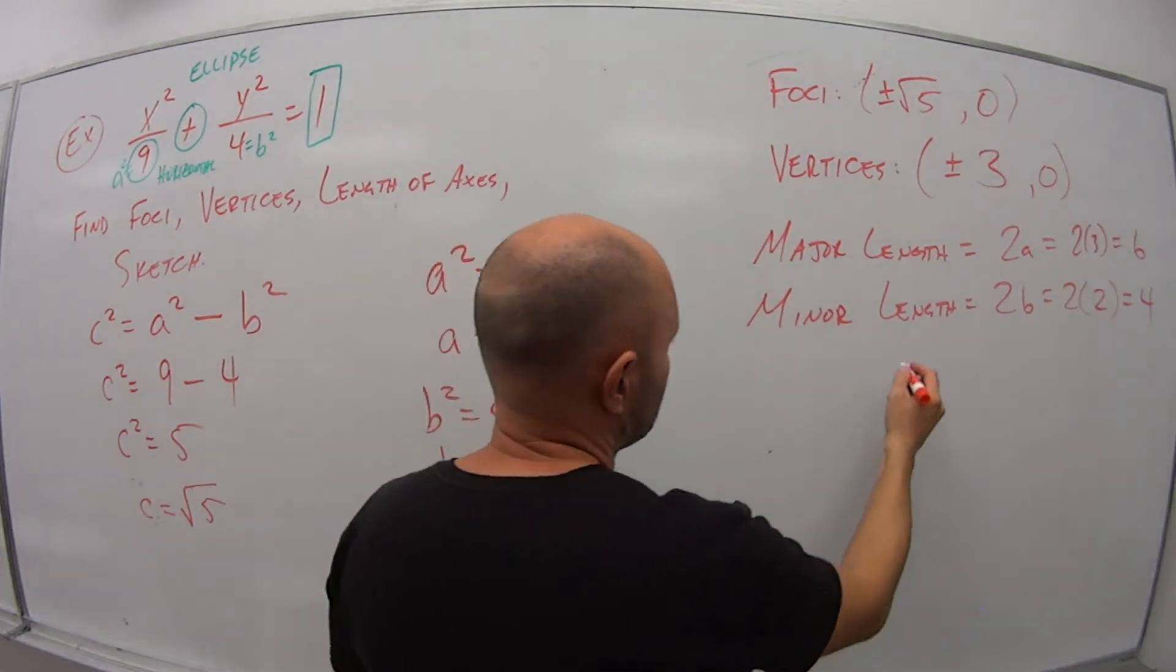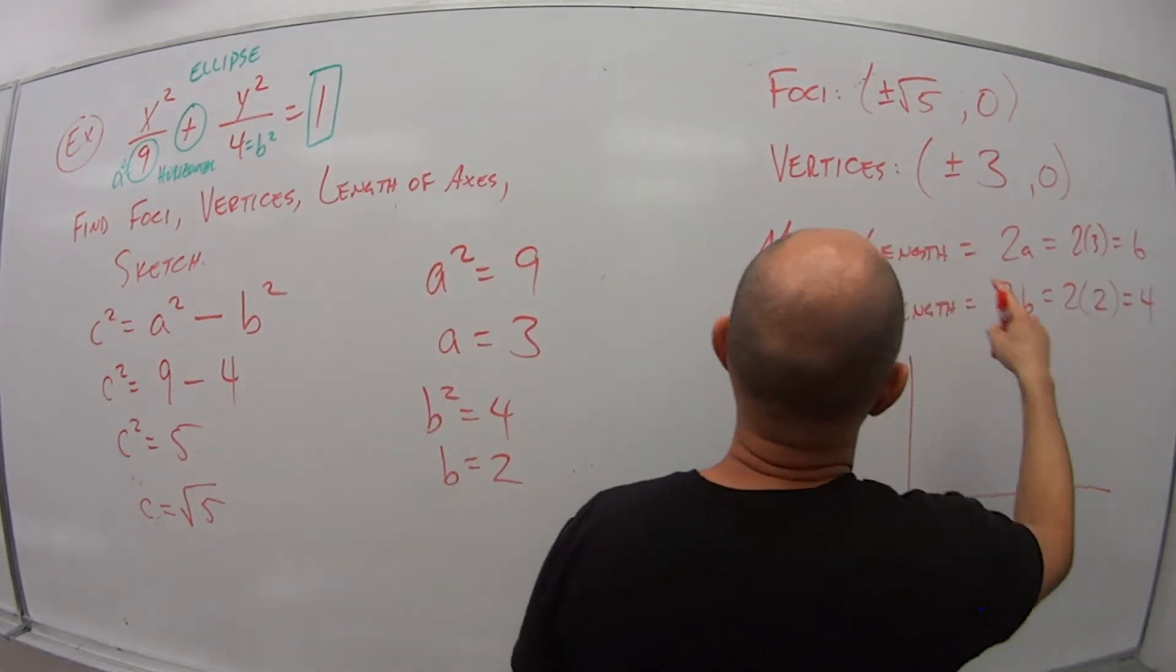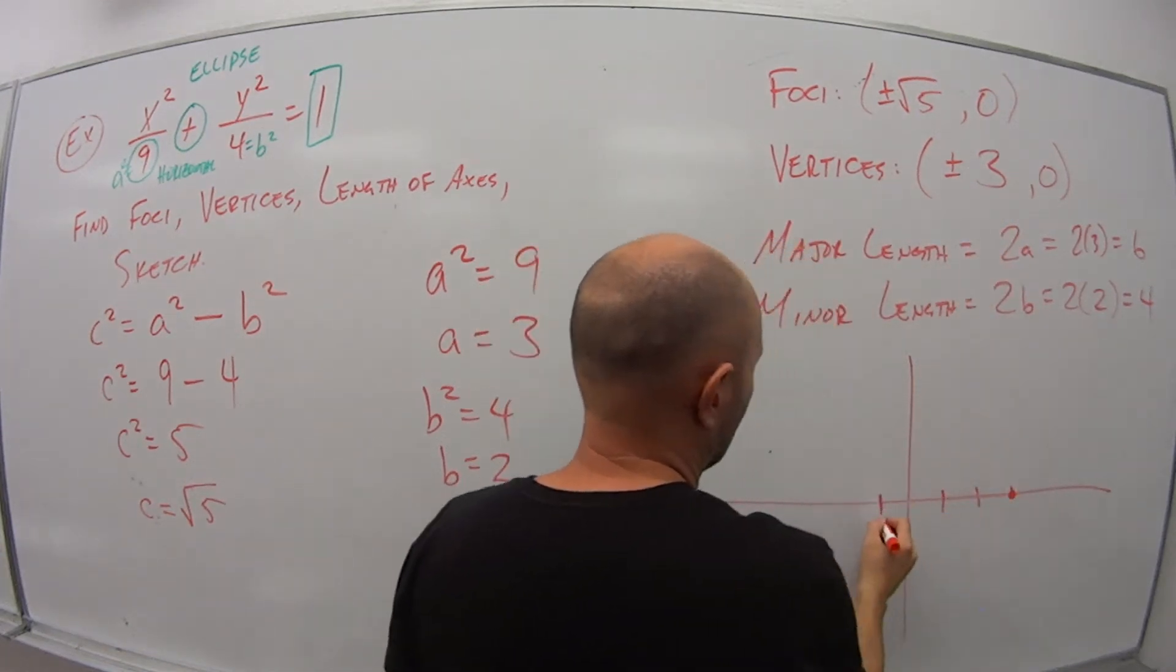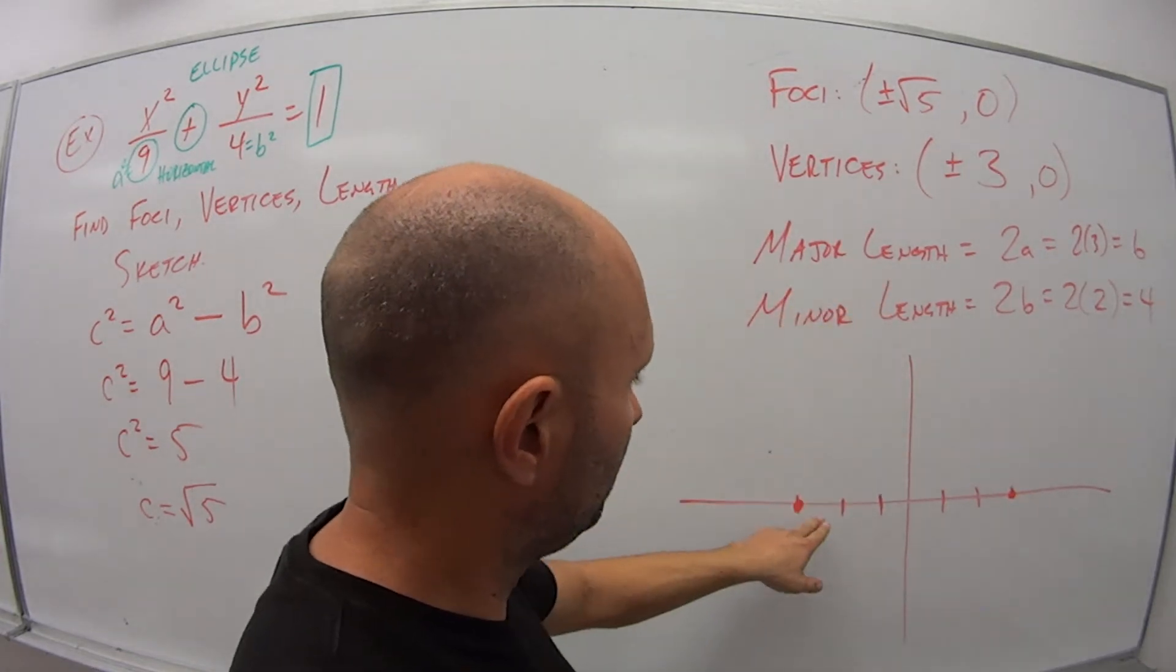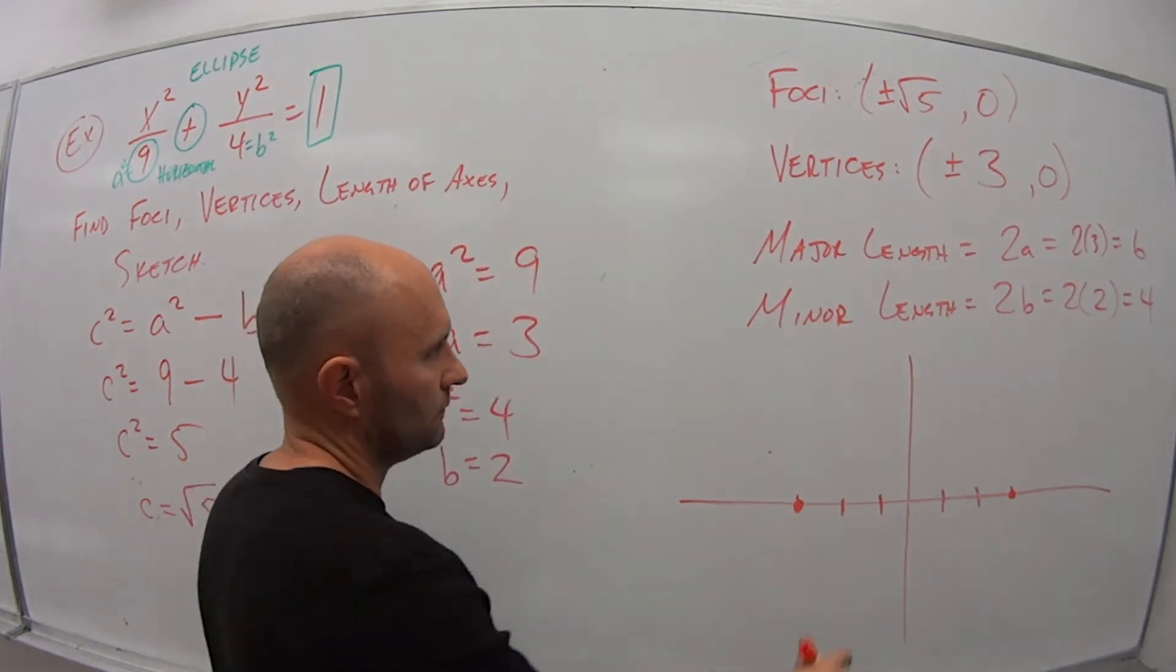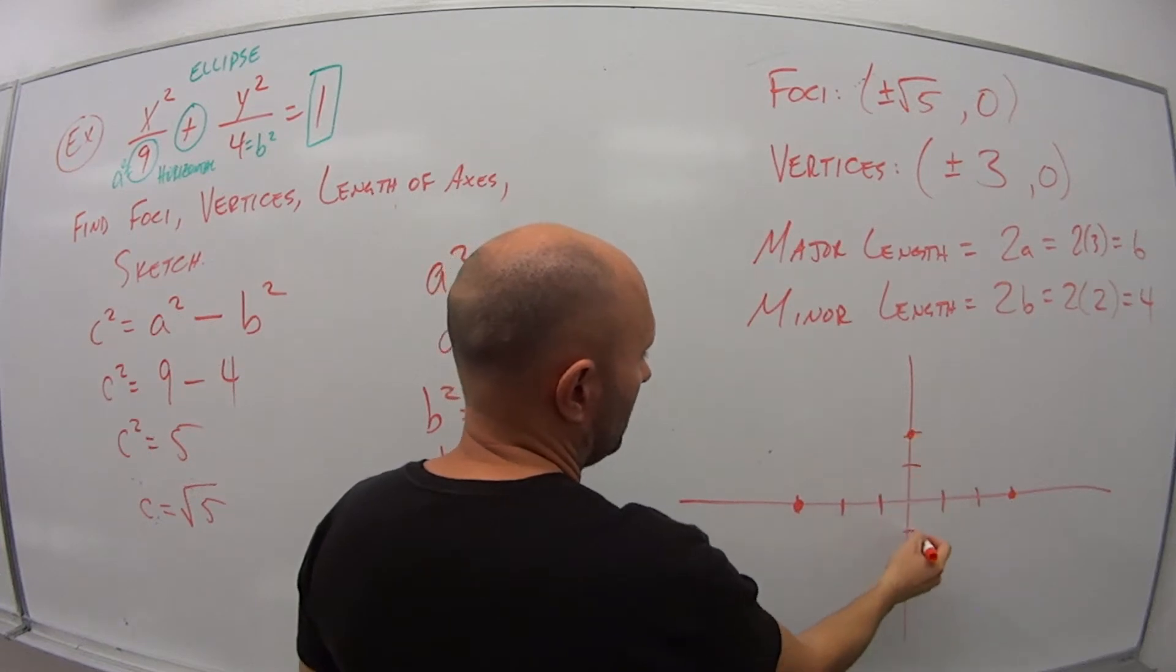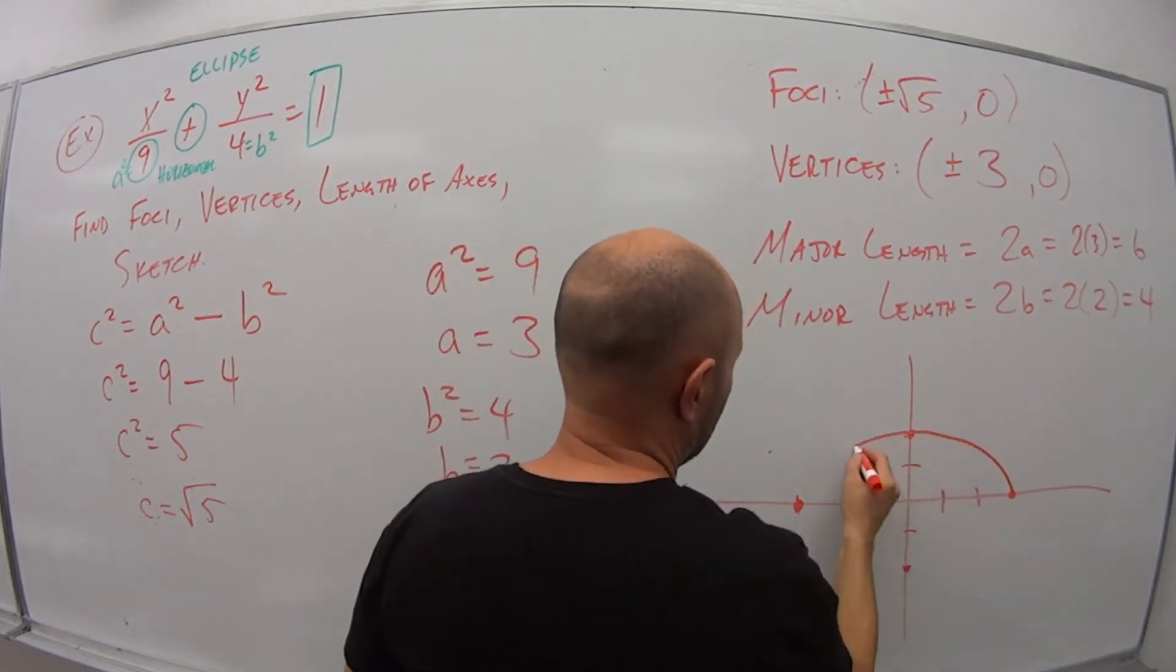So now to sketch this. My vertices are at plus or minus 3 and 0. My major length is 6 units, and I can see 1, 2, 3, 4, 5, 6. So I know I have that part drawn correctly. Minor length is 4, which means I go 2 units up, 2 units down. So that gives me this picture here.